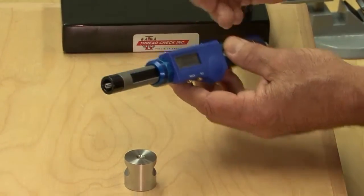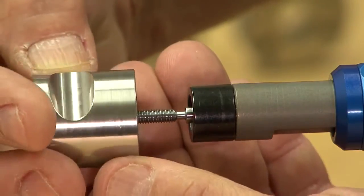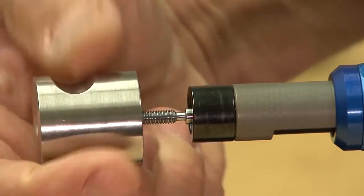ThreadCheck's Gauge Master features a set dimension to set a specific thread size to zero on the thread gauge, and a convenient removal tool to remove the thread plug from the unit.